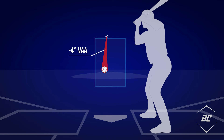For example, fastballs with a vertical approach angle around negative 3 to negative 4 degrees will tend to give the illusion of rise. Knowing how this pitch travels toward the plate can help you understand the characteristics of a pitch better. Pitches with a vertical approach angle around negative 7 degrees travel with more of a steeper slope. You'll usually find sinkers with lower vertical approach angles, since they're the type of pitch that travels with less vertical movement and may drop out of the zone more often.